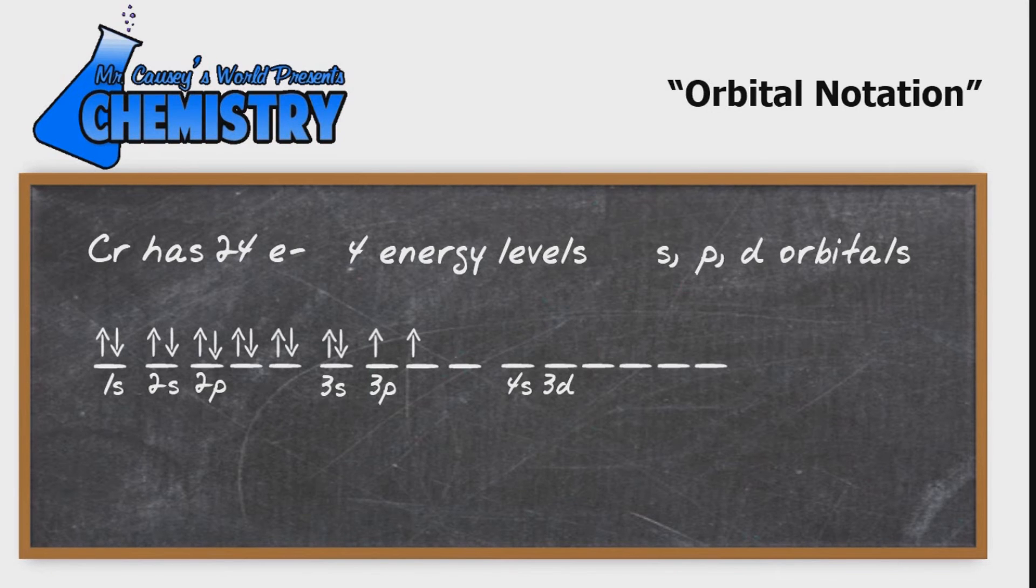Again we have Hund's rule, and then we're going to put 1 in the 4s, and we're going to have one of those electrons jump up into the 3d's. So there it is. There's our orbital notation for chromium.